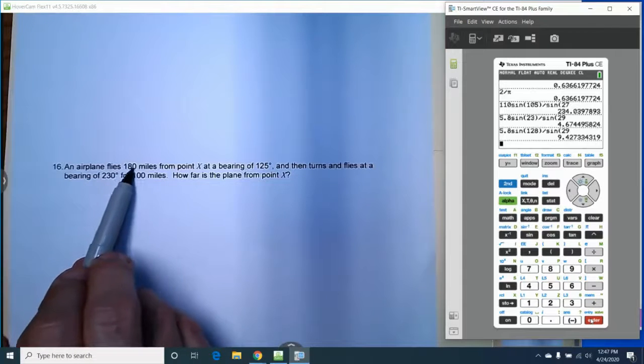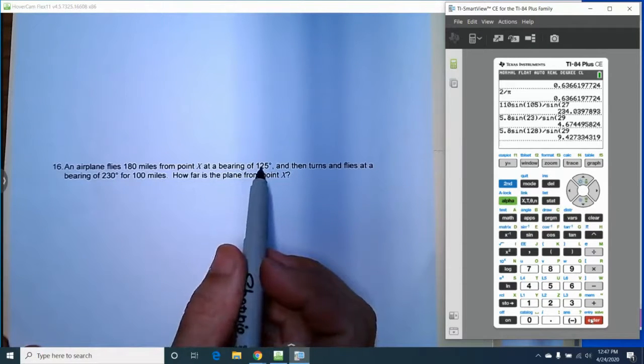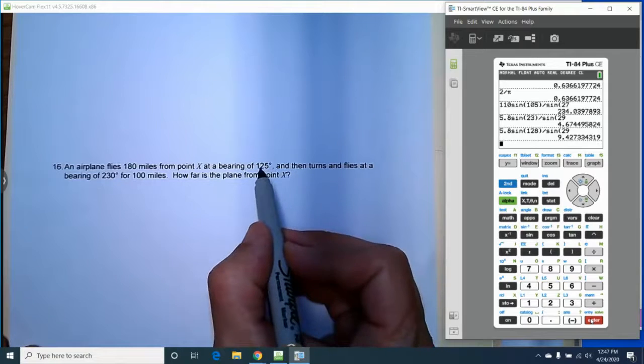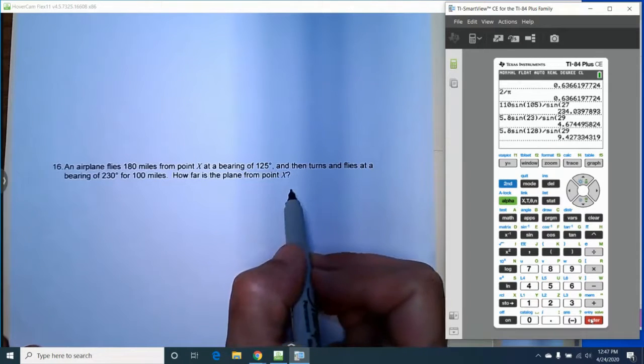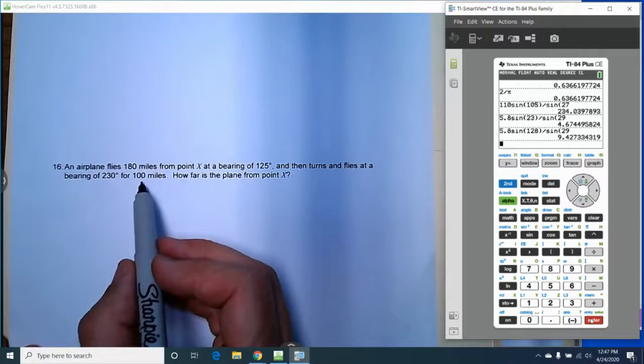This time we've got an airplane that flies 180 miles from point X at a bearing of 125. So this is the kind of bearing where we start from due north, go clockwise, and then it's going to turn and fly at a different bearing for another 100 miles.